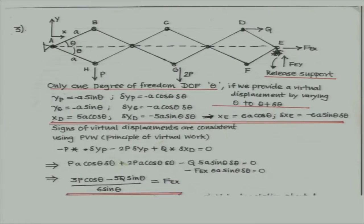Just note one thing: if q is 0 — that is what we saw — if q is 0, what will tend to happen? This point E will try to go inside. So the only way to prevent it from going inside is to apply a reaction which is outside. So F, E, X is proportional to p, not minus p. We are good.